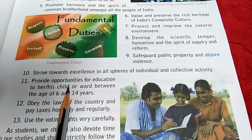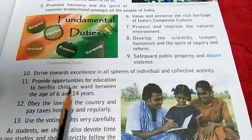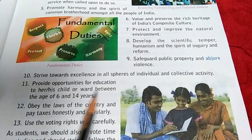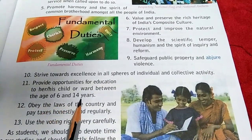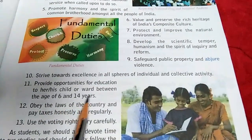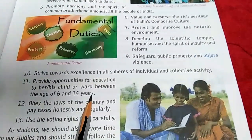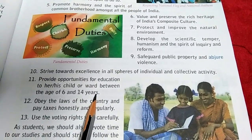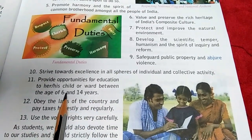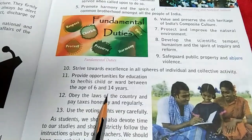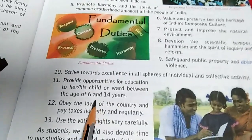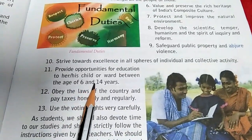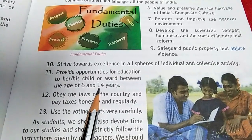Then, provide opportunities for education to your child or ward between the age of 6 and 14 years. This is now a fundamental right — primary education between the ages of 6 to 14 is made compulsory, and it is the Right to Education.